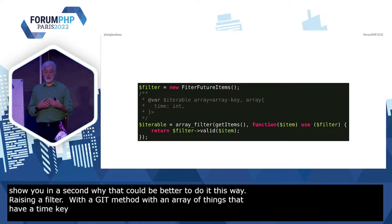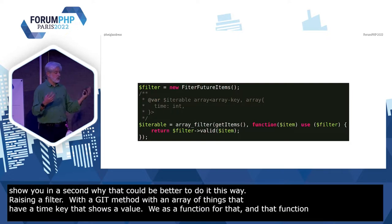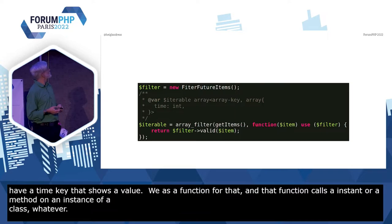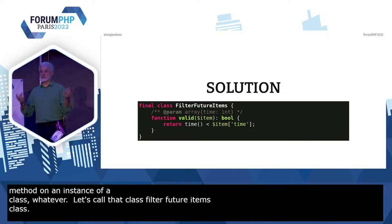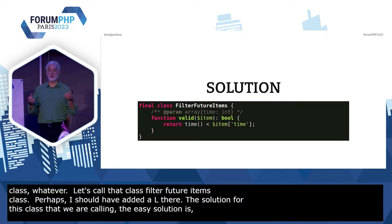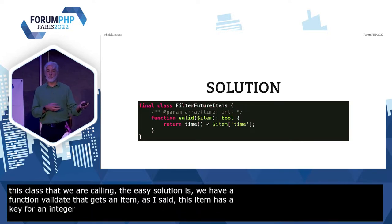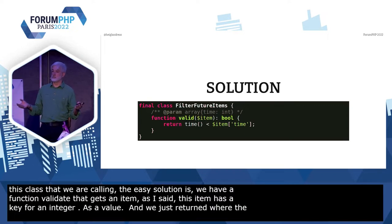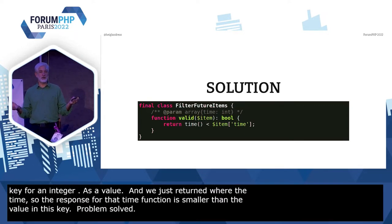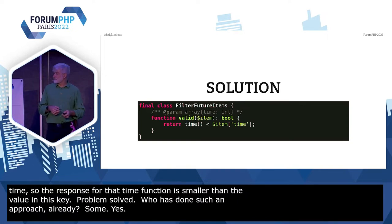To do that, you can write some code. This is already a bit abstracted. We are using array_filter with a getItem method that returns an array of things that have a time key with an integer as a value. We use a function for that, and that function calls a method on an instance of a class. Let's call that class a FilterFutureItems class. The easy solution is we have a function `validate` that gets an item.